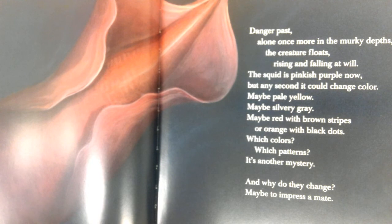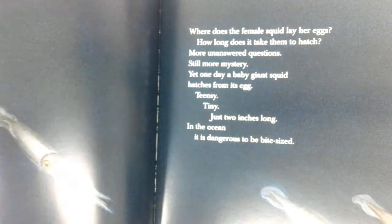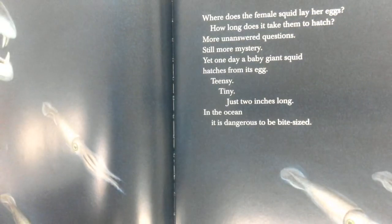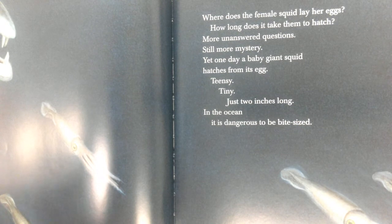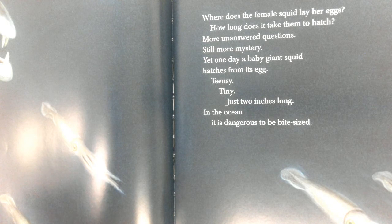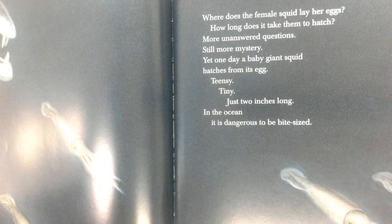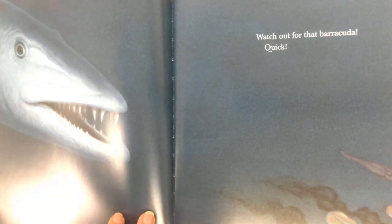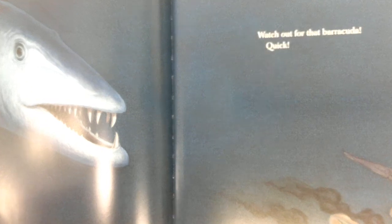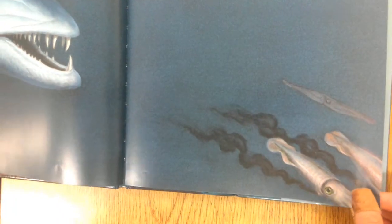Maybe red with brown stripes or orange with black dots. Which colors, which patterns? It's another mystery. And why do they change? Maybe to impress a mate. Where does the female squid lay her eggs? How long does it take them to hatch? More unanswered questions, still more mystery. Yet one day, a baby giant squid hatches from its egg — teensy tiny, just two inches long in the ocean. It is dangerous to be bite-sized. Watch out for that barracuda — quick. Ink.